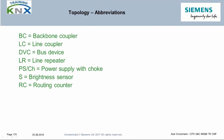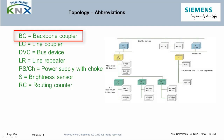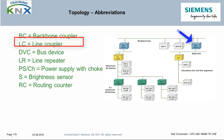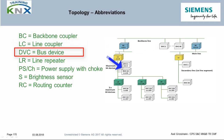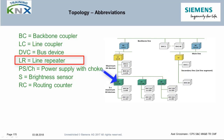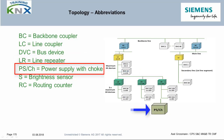Before we start, here again a number of abbreviations used in this chapter and their meaning. BC: Backbone Coupler — a coupler connected as a link between the main line of an area and the backbone line. LC: Line Coupler — a coupler that connects a subline to the main line of the area. DVC: Device or Bus Subscriber. LR: Line Repeater — a coupler used to extend the sublines. PSCH: Voltage Supply with Choke.